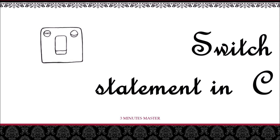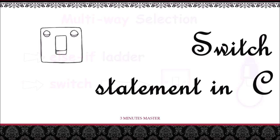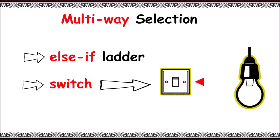Hello guys, welcome to 3mm - 3 minutes master. Let's go ahead with switch statement in C. When we have multiple options to select, we make use of multi-way selections. They are categorized into two types: else-if ladder and switch. In my previous video you can find else-if ladder. Here, let's start with switch statement in C.